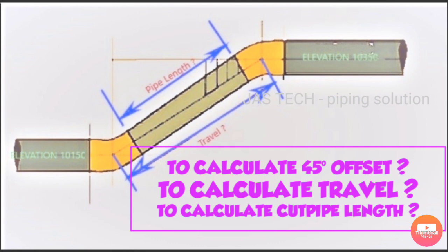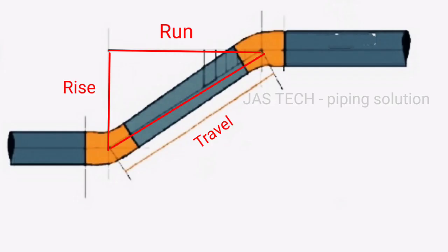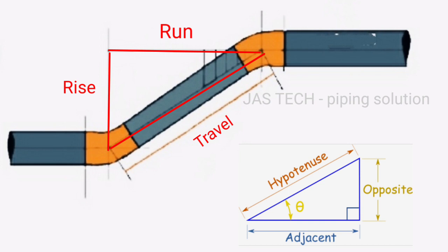We know basic trigonometry. Any triangle has three sides: run, rise and travel. In piping, the opposite side we call rise or set, the adjacent side we call run, and the hypotenuse we call travel.